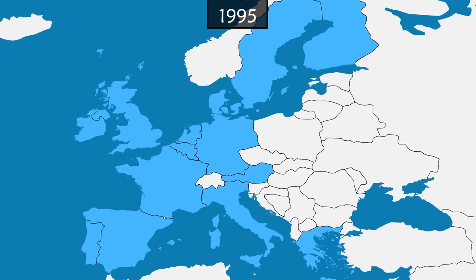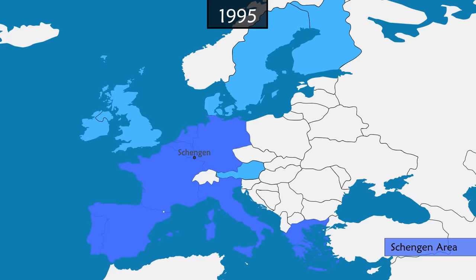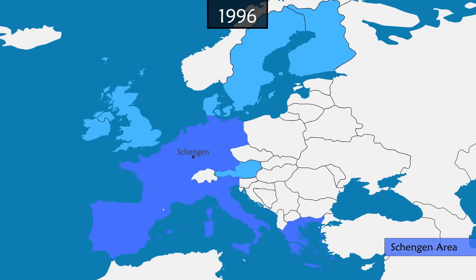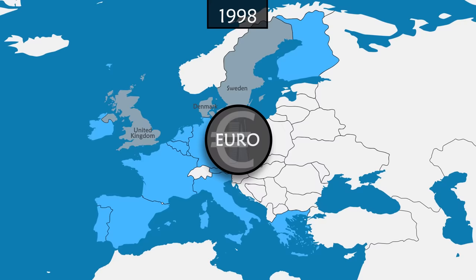Signed in Schengen-Luxembourg in 1985, the Schengen Agreement is gradually introduced from 1995. Its objective is to abolish border controls and therefore have total freedom of movement within the European Union. The agreement is incorporated into the European Union through the Treaty of Amsterdam. In addition, the common currency project advances, which would be called the Euro. However, the United Kingdom, Sweden and Denmark do not want it. The remaining member countries set up the European Central Bank.